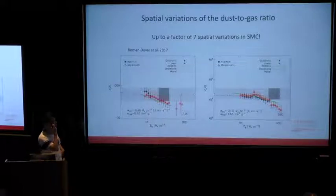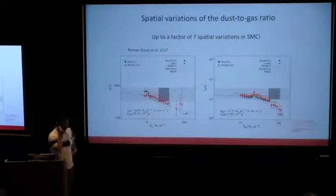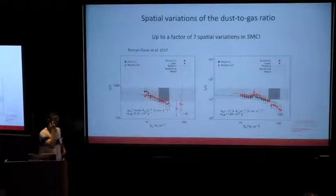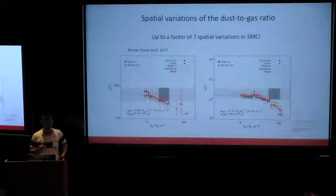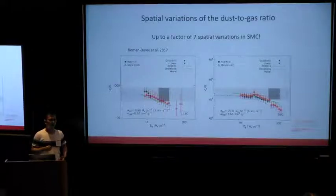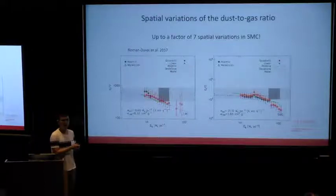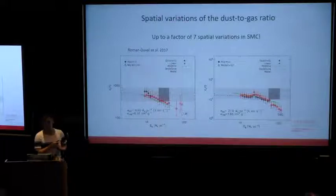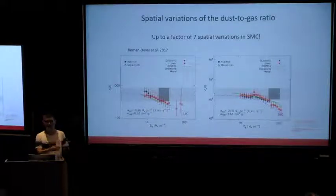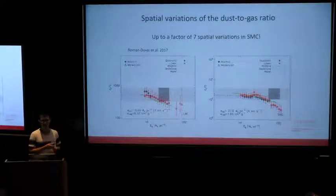However, until very recently, the treatment of dust in hydrodynamic simulations for galaxy formation has been very simplified. The most common approach is to simply assume that, for example, 40% of your metals is actually in dust form. That's how people estimate how much dust you have — a zeroth-order approximation that may or may not be okay, but it's the simplest thing you can do without following the evolution of dust.